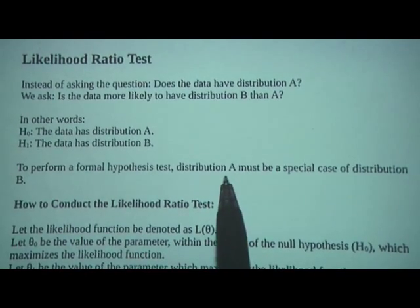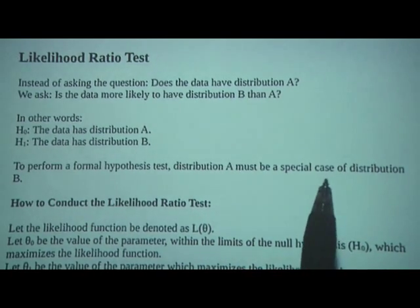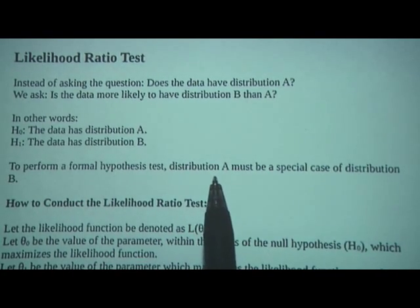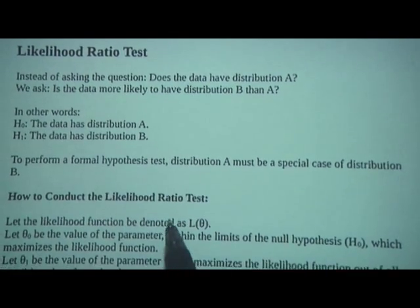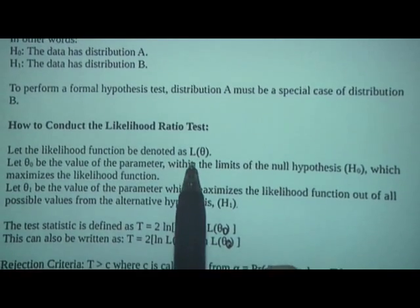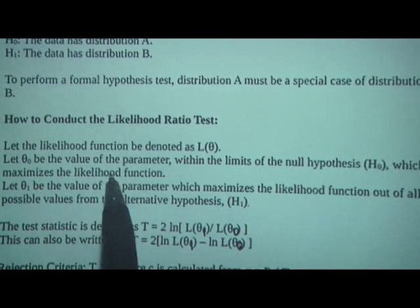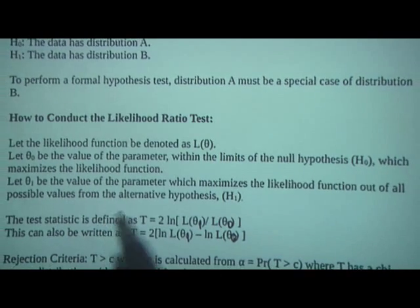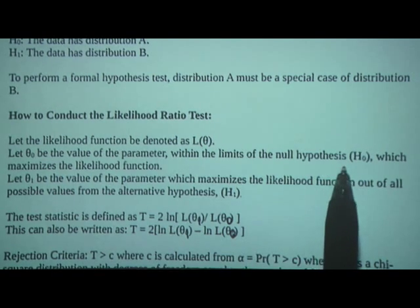So maybe distribution A has a specific mean and then B covers all other values, or say A was a gamma distribution and B was an exponential. To conduct the likelihood ratio test, we let the likelihood function be denoted as L of theta, and theta-naught will be the value of the parameter that maximizes the likelihood function within the limits of the null hypothesis.